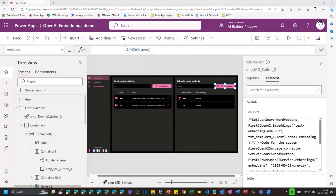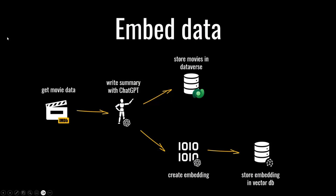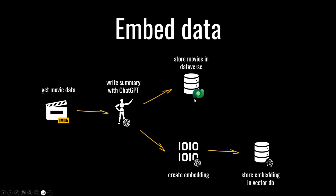Let me show you schematically what I did for the movie demo. I downloaded movie data for 7,000 movies from IMDB - they have a free dataset, really cool stuff. There was no summary or plot in there, so I let ChatGPT write summaries for all 7,000 movies and stored all the metadata in Dataverse. Then I created embeddings for all 7,000 movies - so we have 7,000 vectors with 1,536 numbers each.